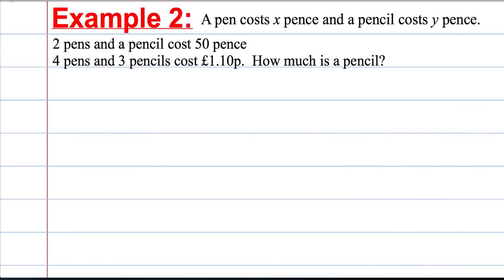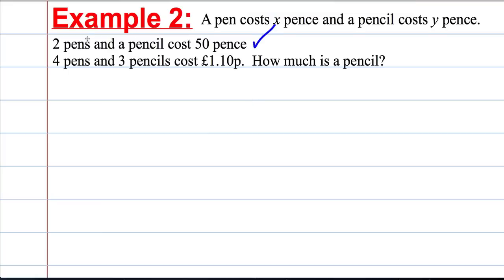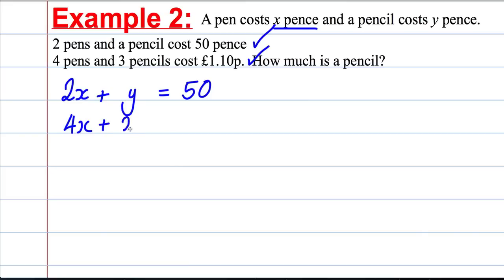Example 2. A pen costs x pence and a pencil costs y pence. Two pens and a pencil cost 50 pence. Four pens and three pencils cost £1 and 10 pence. How much is a pencil? Two pens and a pencil cost 50 pence — each pen costs x pence, we've got two of them so they cost 2x, plus the cost of a pencil y gives 50 pence. That's equation 1. Four pens plus three pencils equals 110 pence — converting £1.10 to pence. That's equation 2.